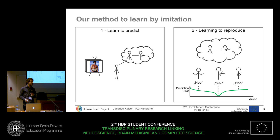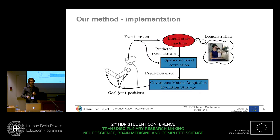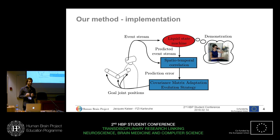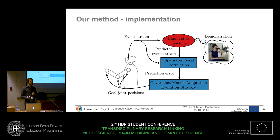Now I'm going to show you the implementation of the method. We have a robot, as you can see. And we have a Liquid State Machine, which is a recurrent spiking neural network, which is trained to predict — this is step one. We train it with visual data from humans. We don't use camera data; we actually use dynamic vision sensors, which are event-based motion sensors. You will see what they look like in a moment.